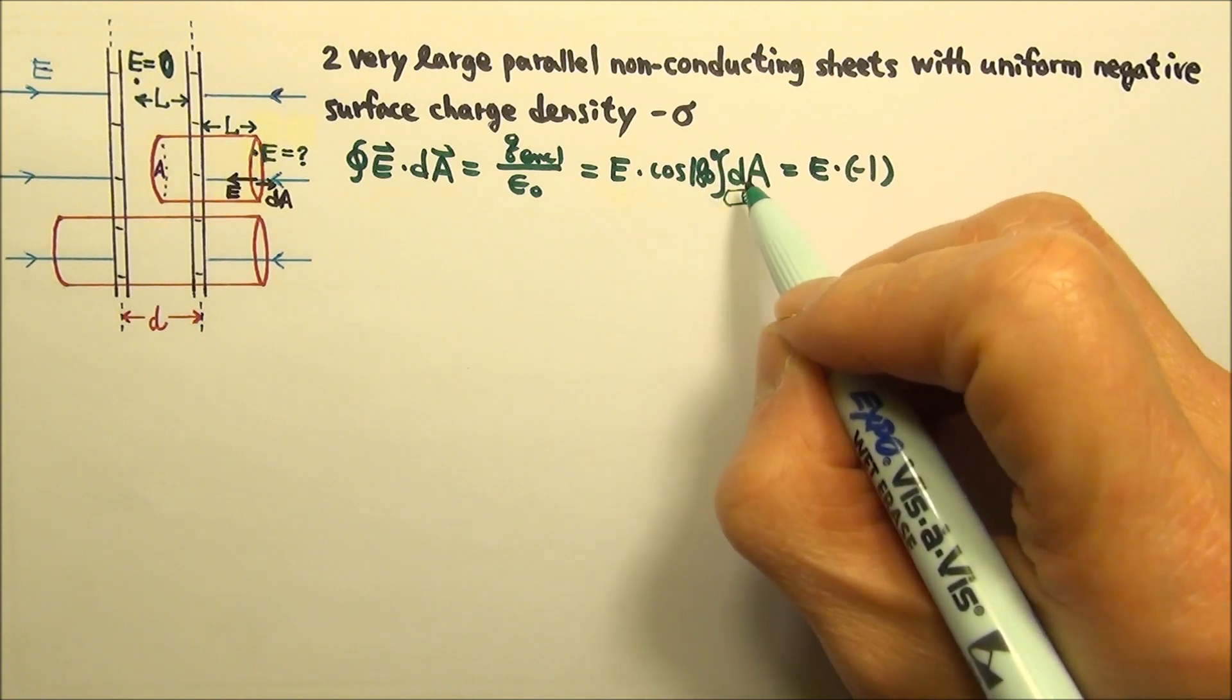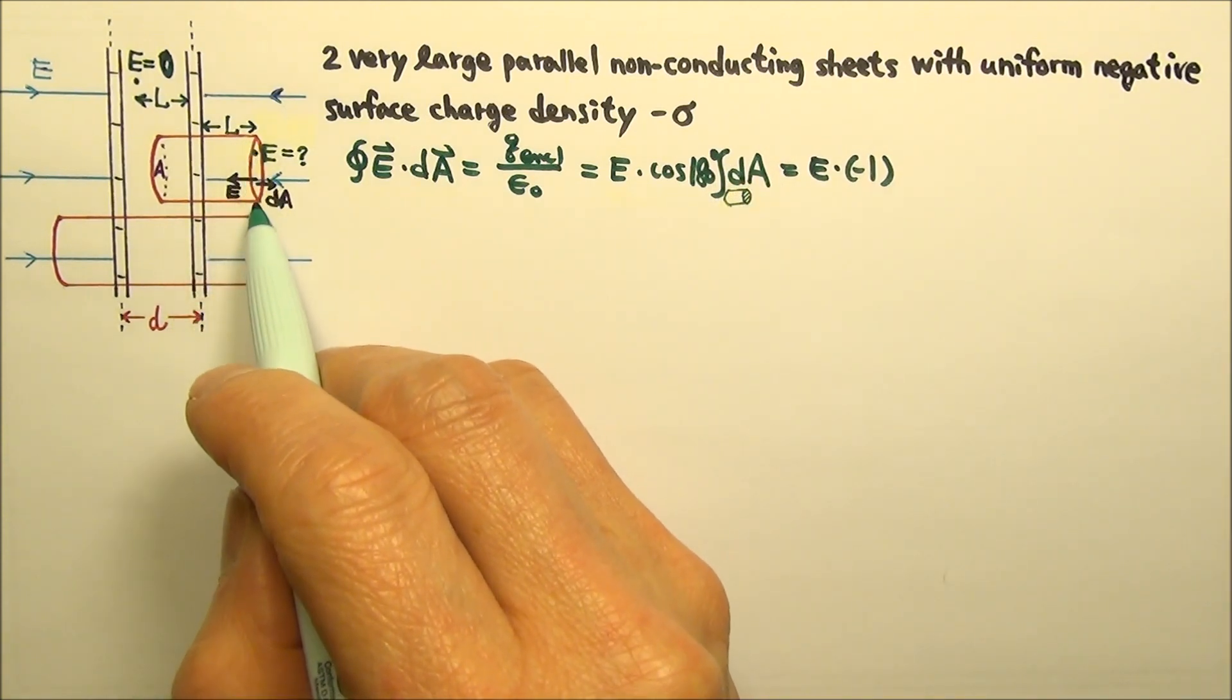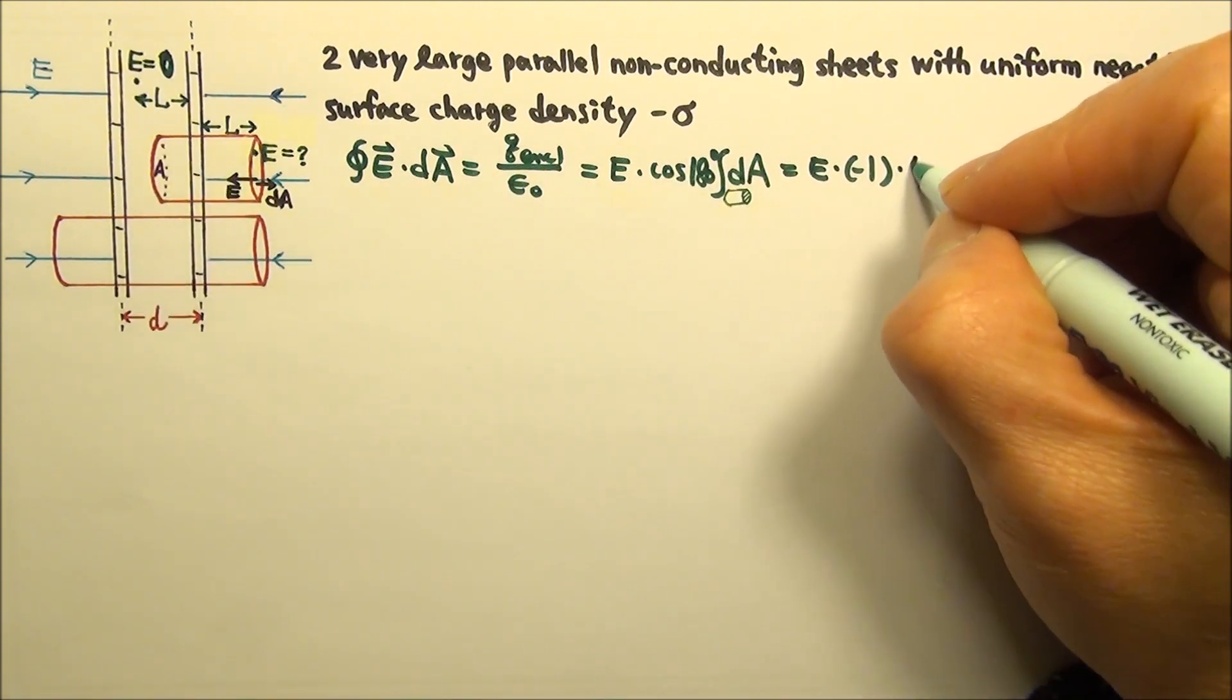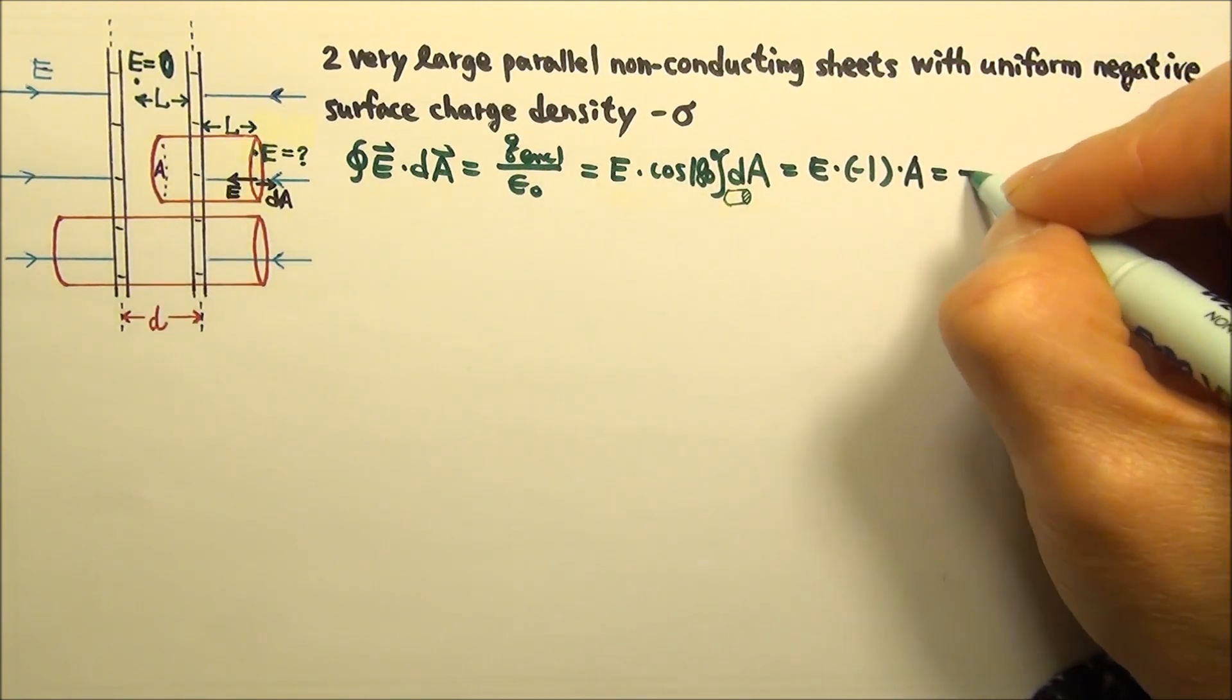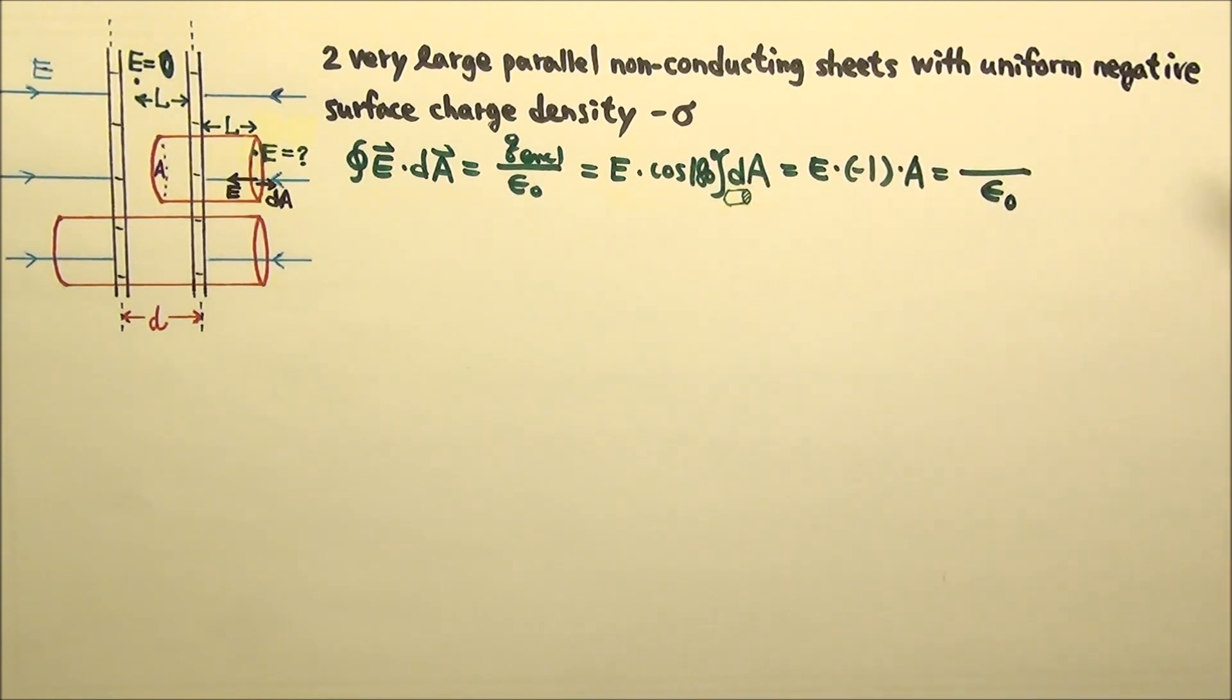times the integral of dA for the right end of this Gaussian surface, which is A. And this equals to the q enclosed over epsilon naught. What is the enclosed charge?